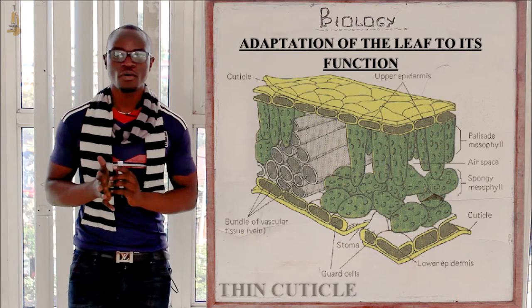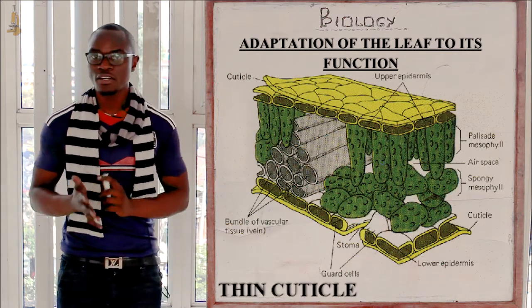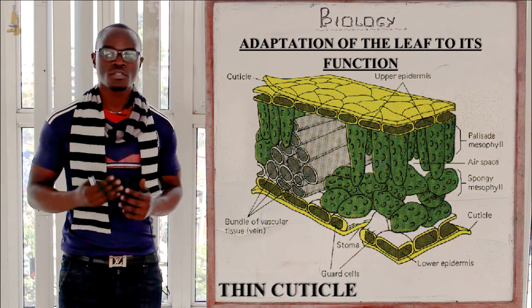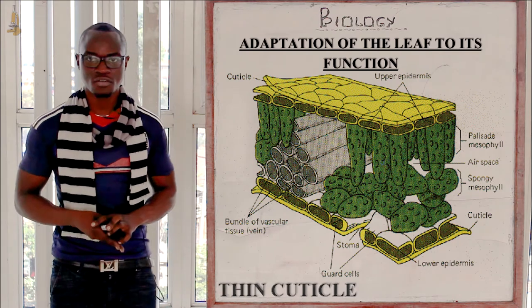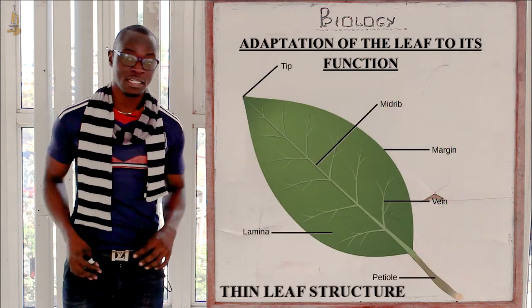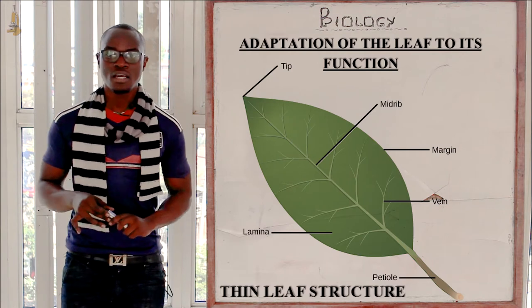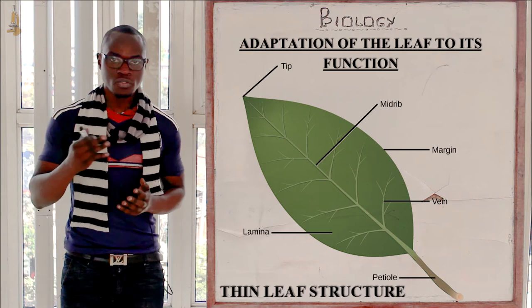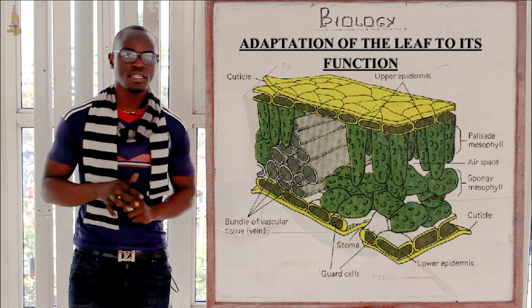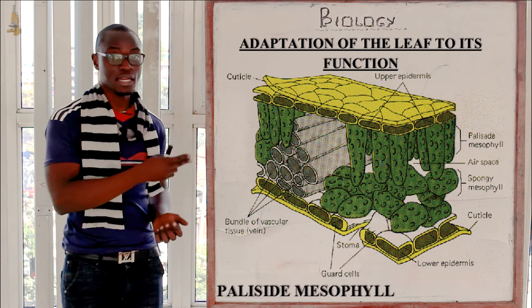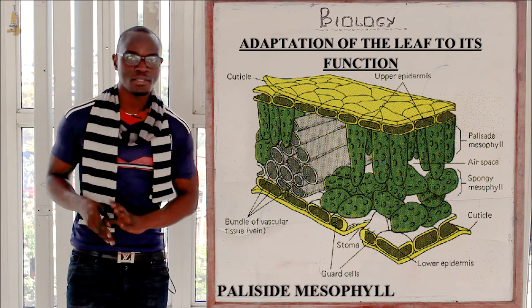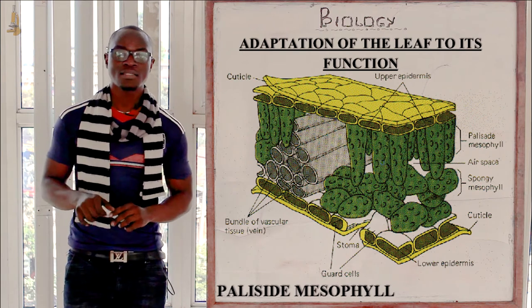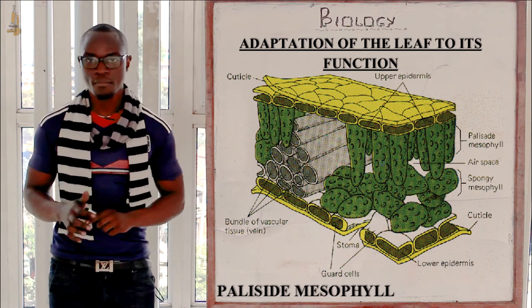The leaf has a very thin cuticle, allowing maximum sunlight to penetrate through to the internal structures. The leaf itself is also very thin for easier diffusion of gases throughout the leaf structure. The palisade cells are located on the upper parts of the leaf so as to be in contact with first-hand sunlight rays for maximum photosynthesis.